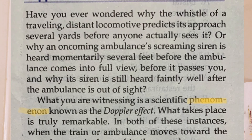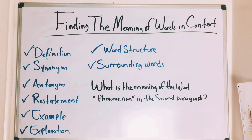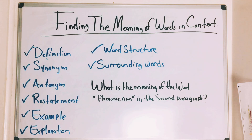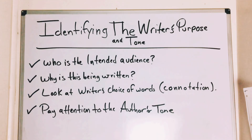Sometimes a word is used in the same context you're thinking of, but sometimes it's not. You may think you know a word and then realize the author meant it in a different context. So it's really important to pay attention to all the tips on the board. Identifying the writer's purpose and tone — you might get a question asking what the writer's tone is.